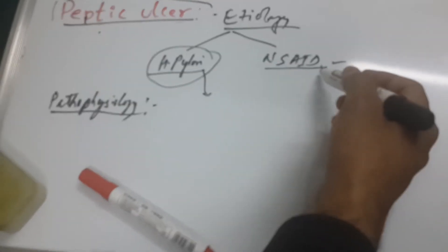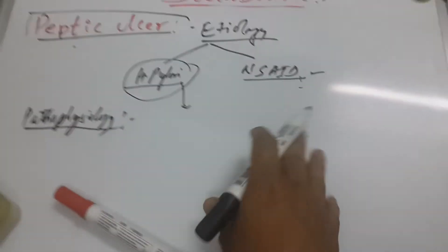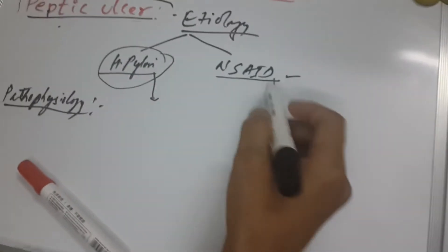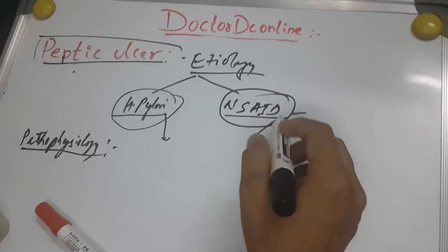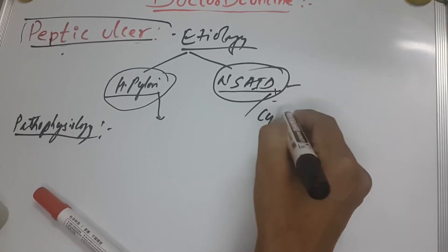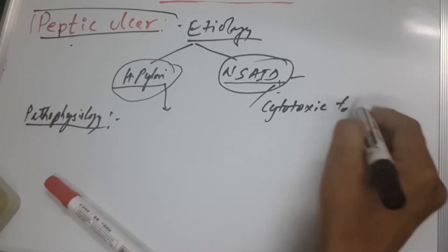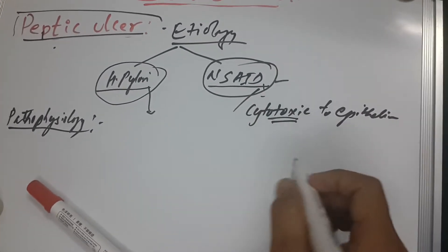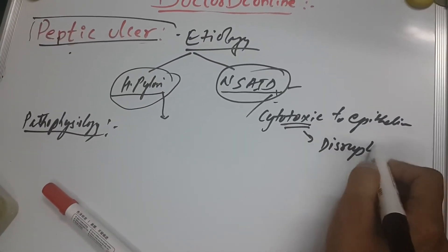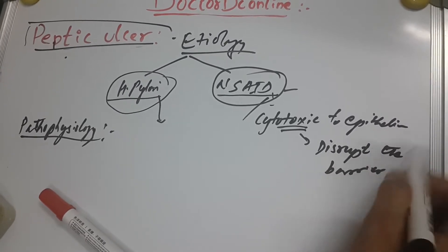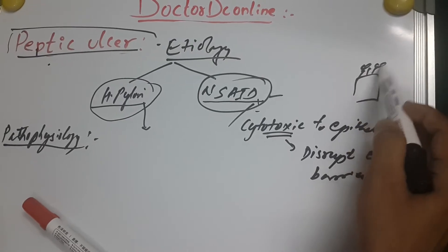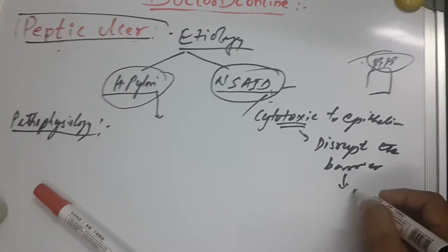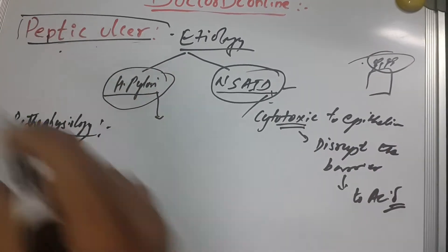I will go for NSAIDs first because it is a bit easier. The main drugs — their main effect on the epithelium is cytotoxic to the epithelium. There is a luminal epithelium and there is a cytotoxic effect because NSAIDs can disrupt the barrier. There is a phospholipid glycoprotein barrier, and NSAIDs disrupt it, making the epithelium exposed to acids, which produces the peptic ulcer.